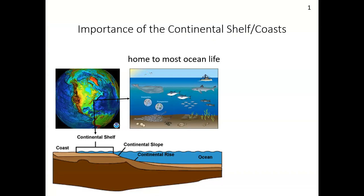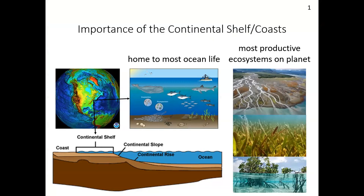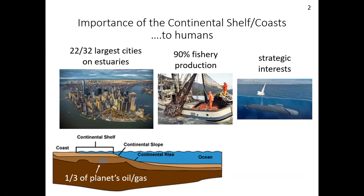The continental shelf and coastlines are home to most oceanic life — some of the most productive ecosystems on the planet: wetlands, seagrasses, mangrove forests, et cetera. 22 out of the 32 largest cities are on estuaries. 90% of fishery production can be found within the continental shelf. Strategic interests are evident — that's where a lot of funding comes from, from the Office of Naval Research. About a third of the world's oil and gas can be found within the continental shelf margins. All of these things use acoustics one way or another.